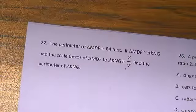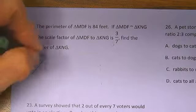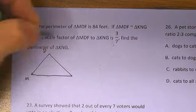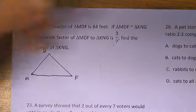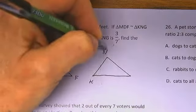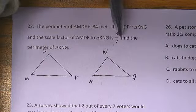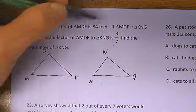Okay, let's see if we can get this done quickly. The perimeter of MDF is 84 feet. If MDF is similar to KNG, and the scale factor is known to be 3 to 7, this plus this plus this equals 84.